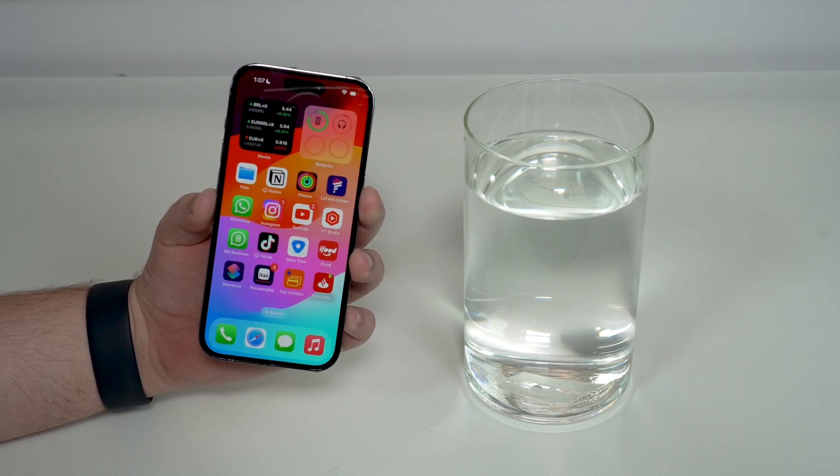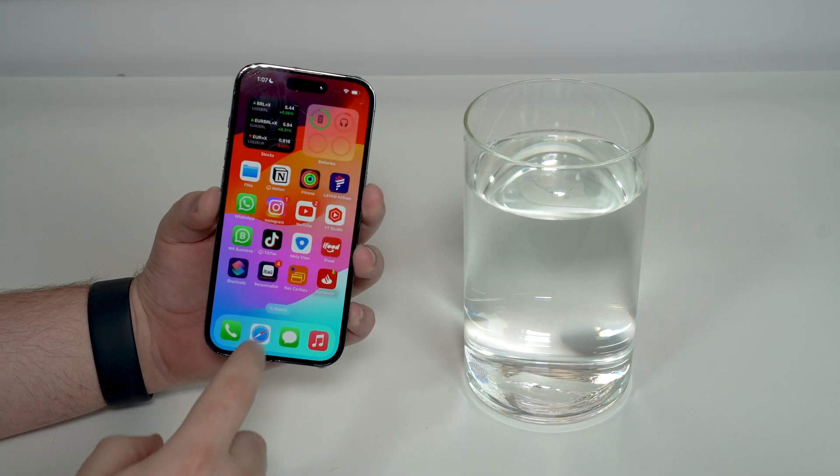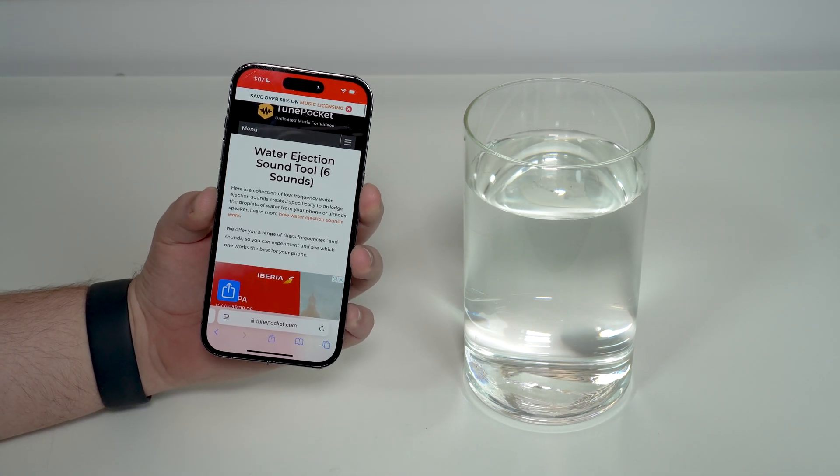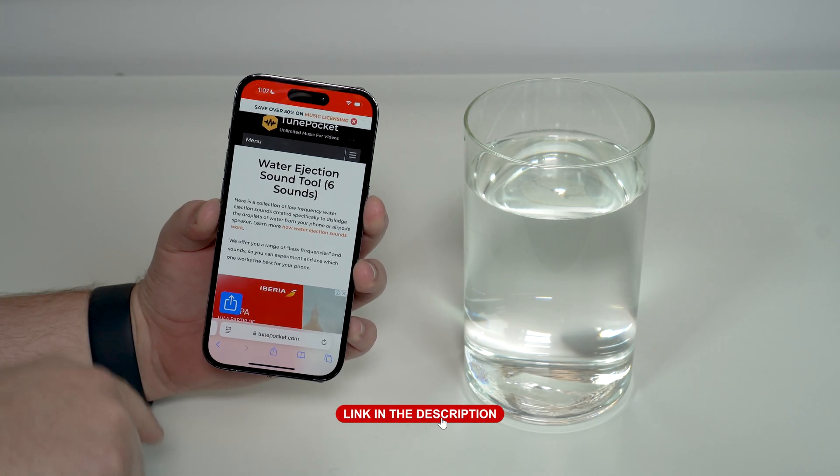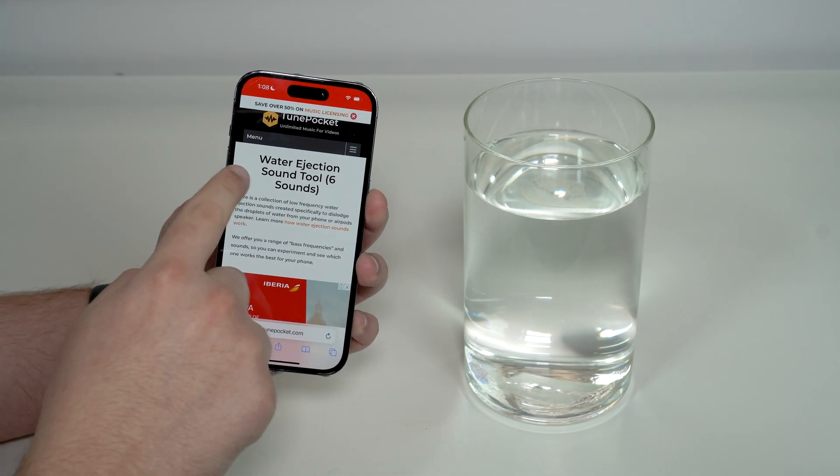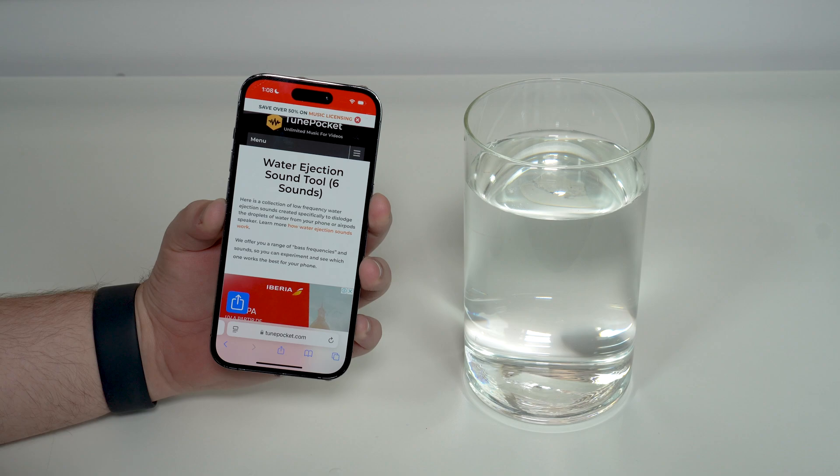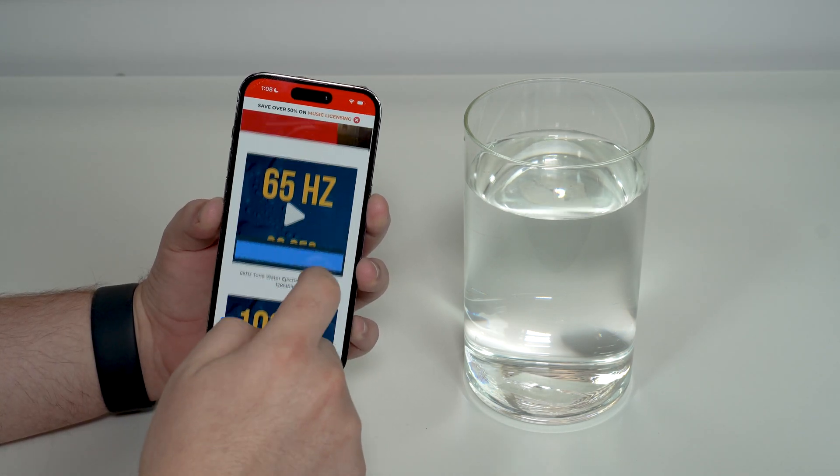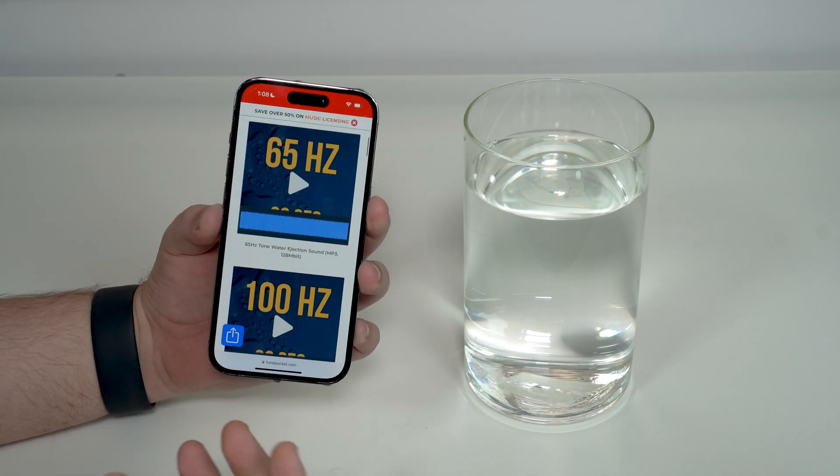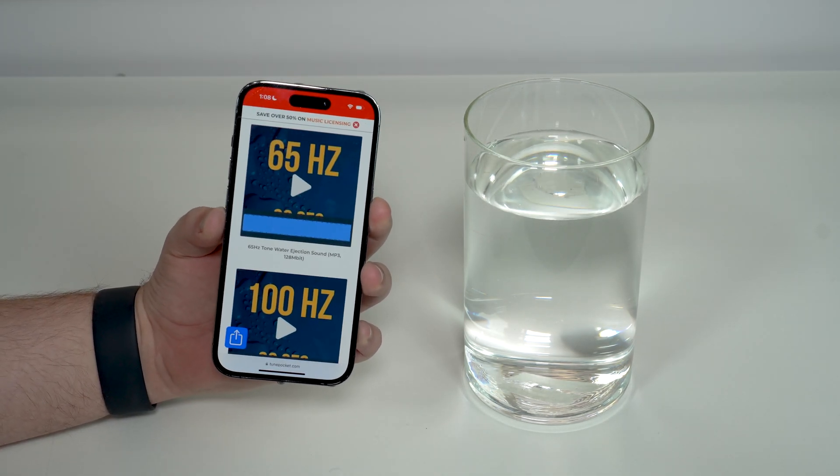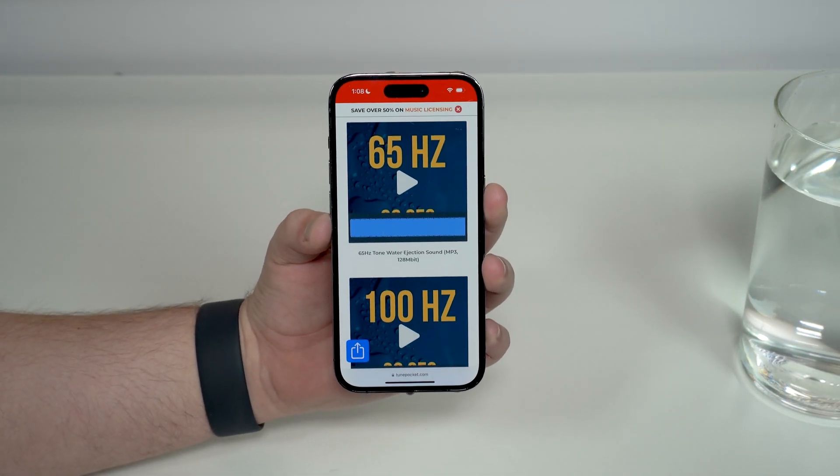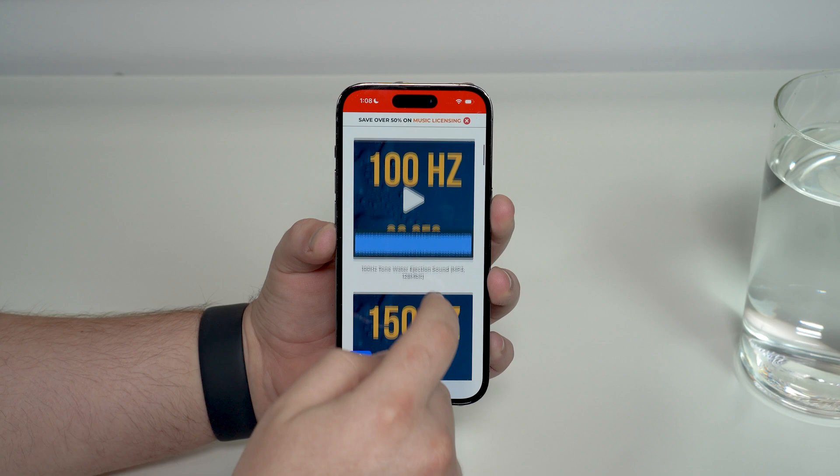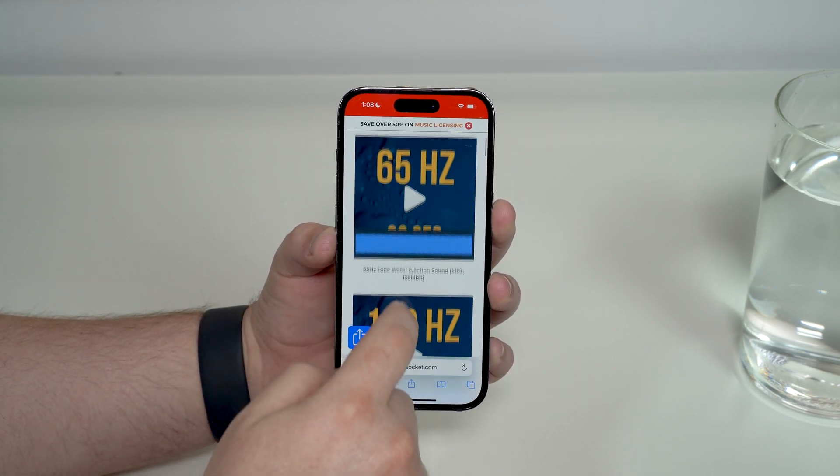Go ahead and open Safari and go to this website from Tune Pocket. Of course I'm gonna have a direct link in the description down below. As you can see, water ejection sound tool - six sounds. So it's gonna give you much more to play with. It's gonna give you six different frequencies which will help you out a ton. Let me move it to the side. As you can see right here, 65 hertz, 100 hertz, 150, and even more at the bottom.